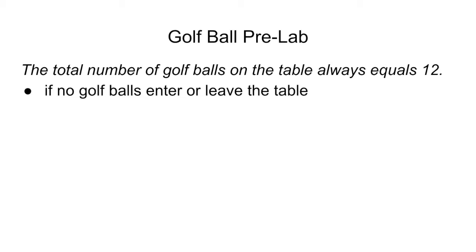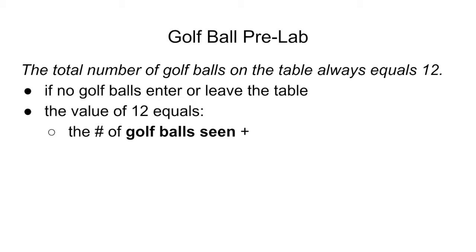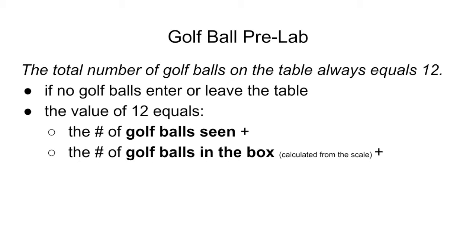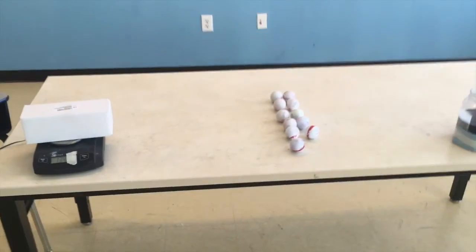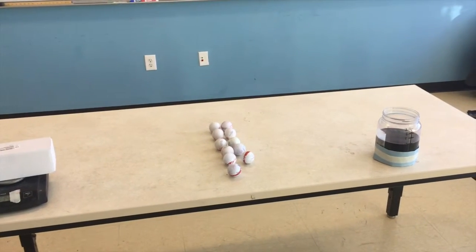Now that we've calculated the mass of one of these golf balls, there's a new way that we can think about recognizing where golf balls are on the table. The value of that 12 that we started out with is now part of an equation. The value of 12 equals the number of golf balls seen — when it was 12, we could see 12. But now we have to add a new term and say it's not just the golf balls we can see, but also the golf balls in the box, which we can calculate from the scale. We're going to do another change and see if we can figure some stuff out about the golf balls on the table.